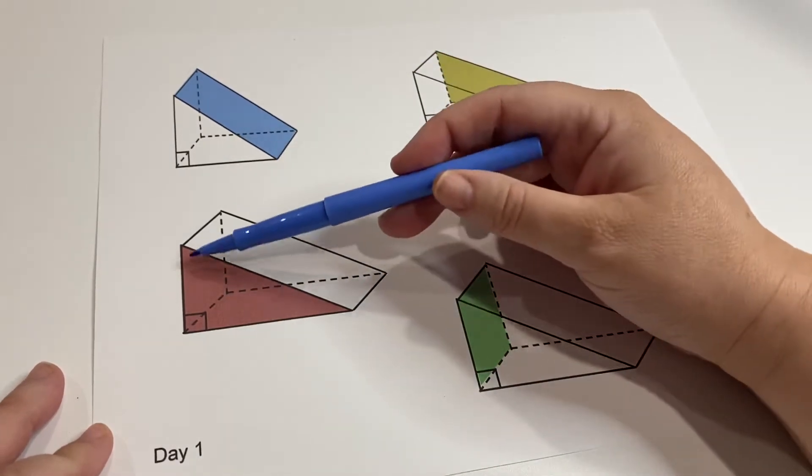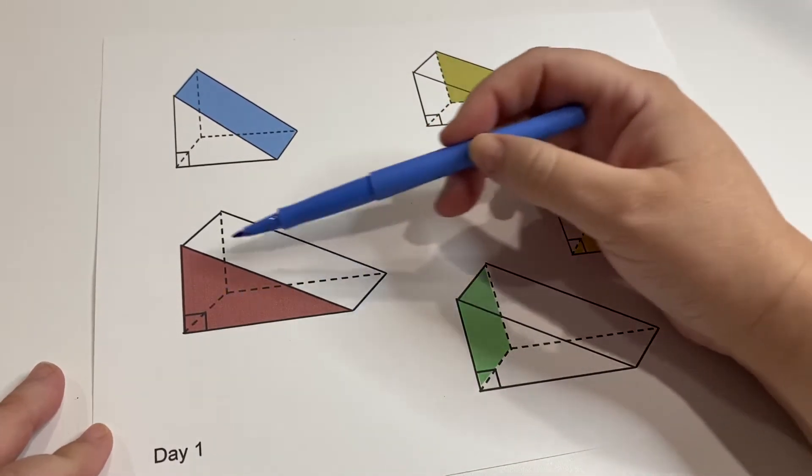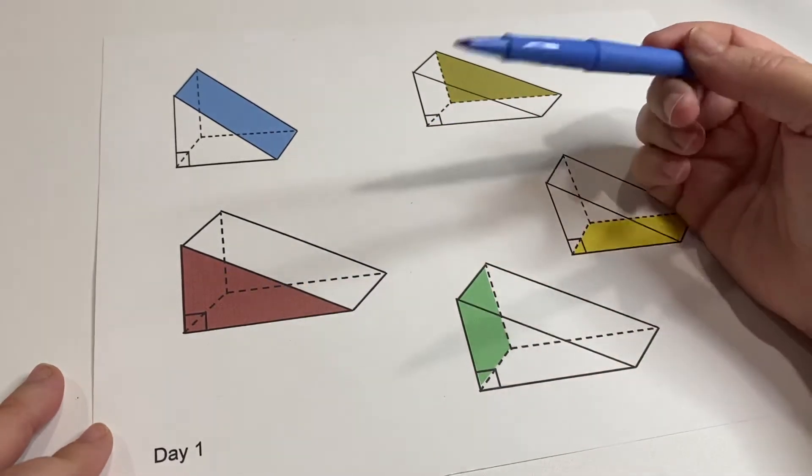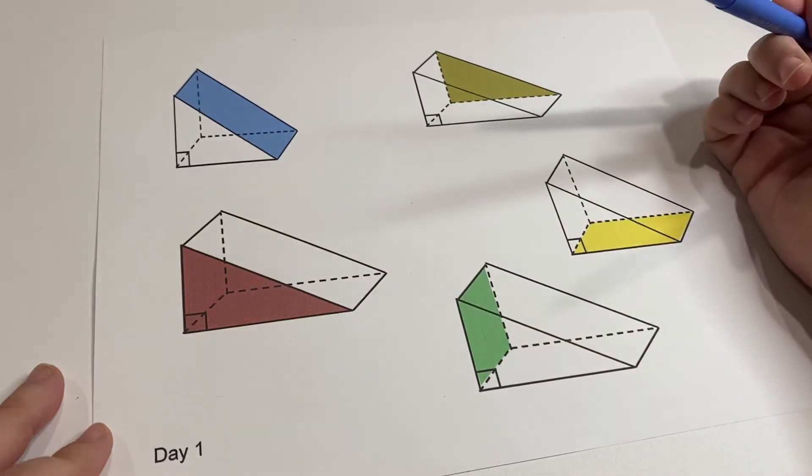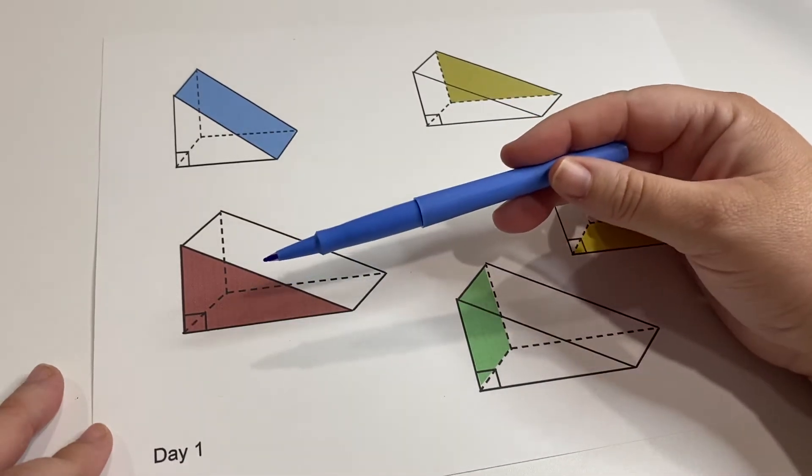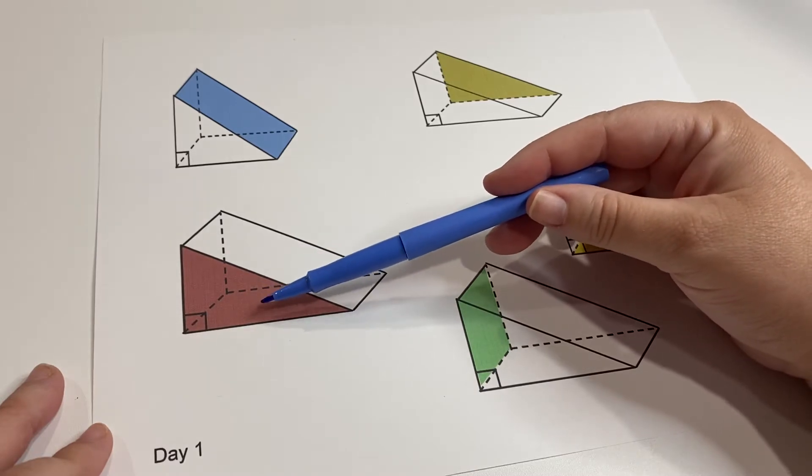So see this pink one here? This is a triangle, right? And we're going to call that the front triangle, we could call it the left triangle, or we could even call it a base triangle of this triangular prism.